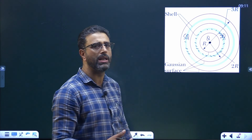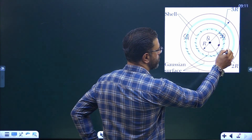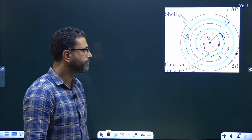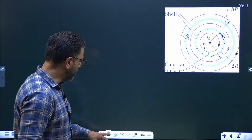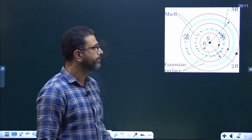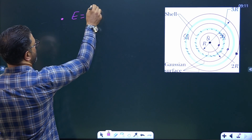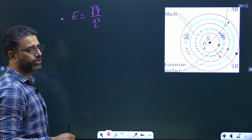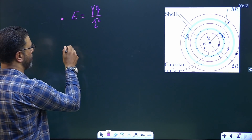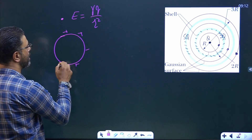We have to rank the three Gaussian surfaces according to the magnitude of the electric field at a point on each Gaussian surface. From Gauss law, the electric field due to a point charge is γQ divided by R², where γ is the electrostatic constant 1/(4πε₀).